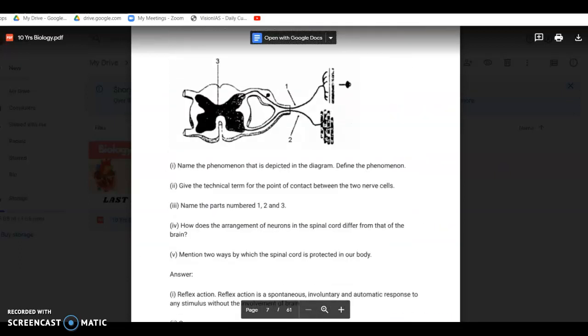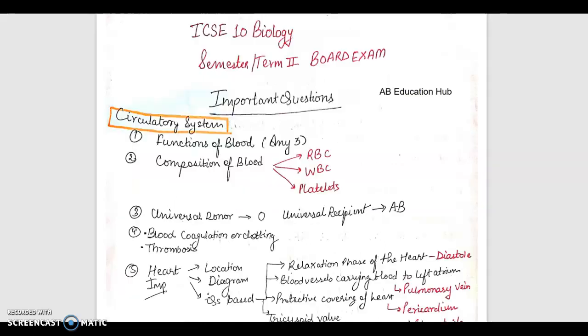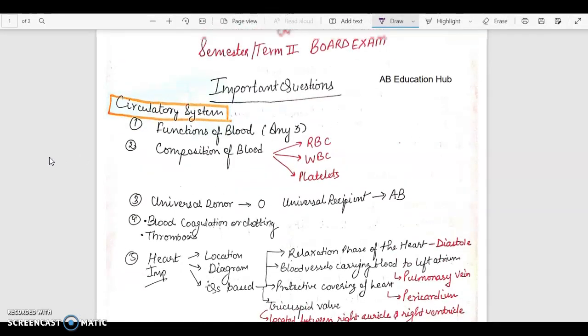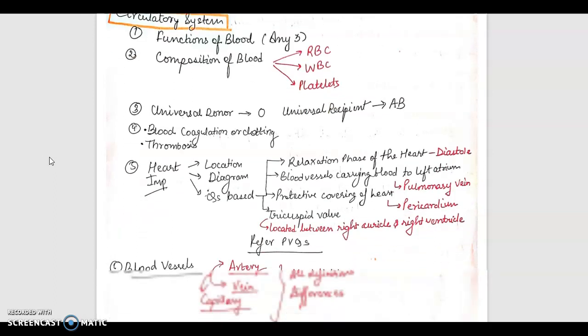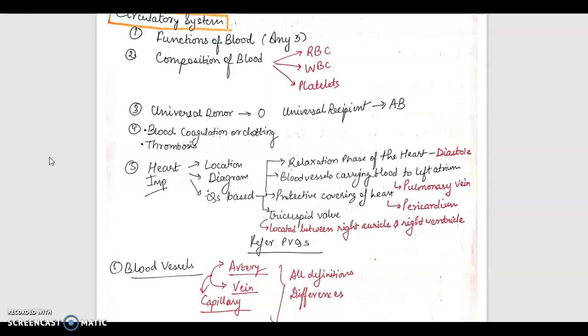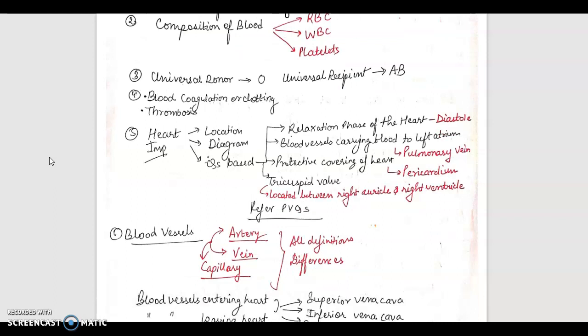Let's continue. Functions of blood - any three functions can be asked. Then composition of blood which is RBC, WBC, and platelets. Their other names must be revised. Then universal donor, that is the O blood group, and universal recipient, that is AB. Then we come to coagulation or clotting property and next property is thrombosis. You will have to go to your book and just revise everything.